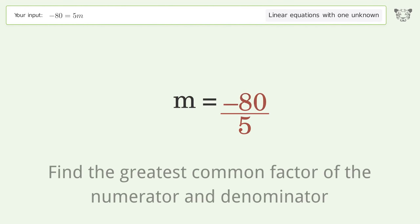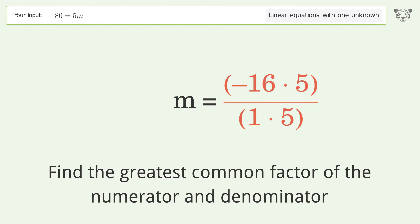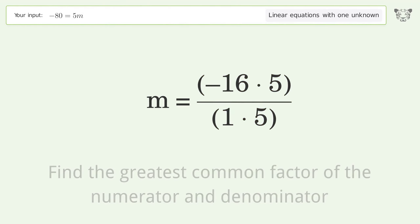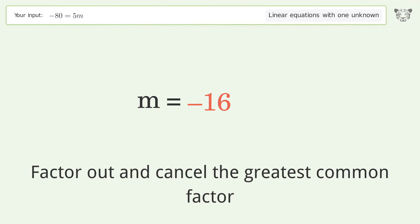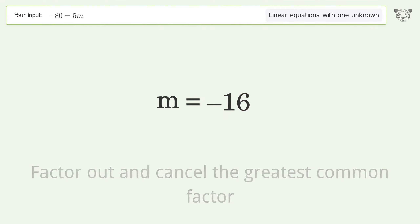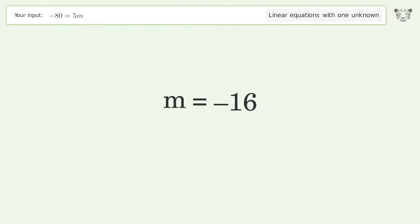Find the greatest common factor of the numerator and denominator. Factor out and cancel the greatest common factor. And so the final result is m equals negative 16.